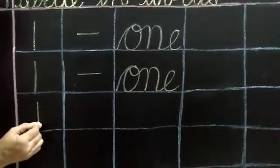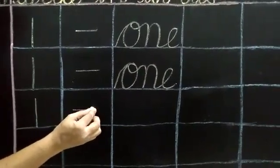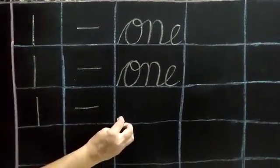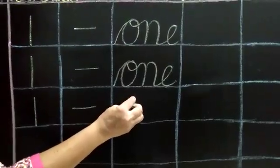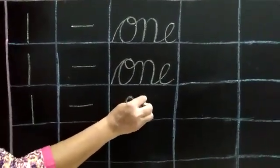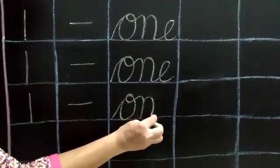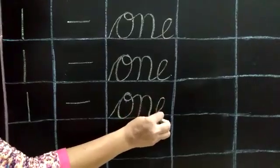Once again, I'm writing it again. Here, 1. Then spelling of 1: O, N, E, 1.